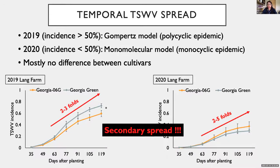In general, temporal spread was not different between cultivars, except for one trial presented here on the left, where the final incidence was higher in Georgia Green than Georgia 06G.